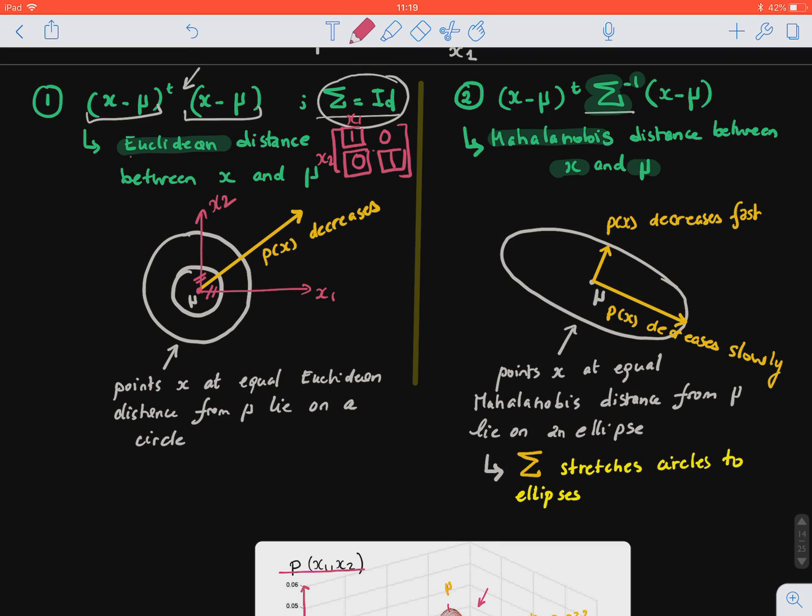And the points that locate at equal Euclidean distance from the mean, they have the same probability. So they have exactly the same probability.